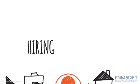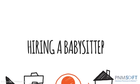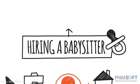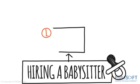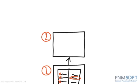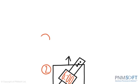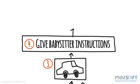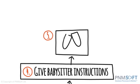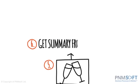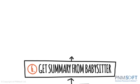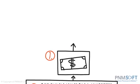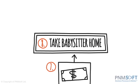A day-to-day example would be a workflow for hiring a babysitter for a night out. This workflow might look as follows: Step 1, call through a list of babysitters until you find an available one. Step 2, set up time with babysitter. Step 3, pick up babysitter. Step 4, give babysitter instructions. Step 5, go on date. Step 6, get summary from babysitter. Step 7, pay babysitter. Step 8, take babysitter home.